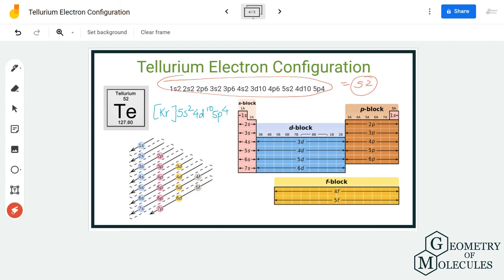You can also write it another way, which is Kr 5s2 4d10 5p4. Generally what we do is take the electron configuration of the nearest noble element, put that into the bracket, and then write the electron configuration after it. Up to 4p6 is the electron configuration of Kr, and after that you write the remaining configuration for tellurium.